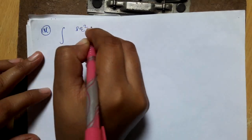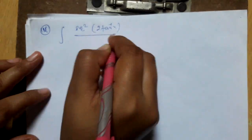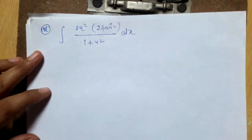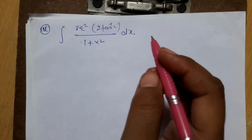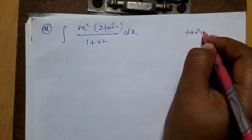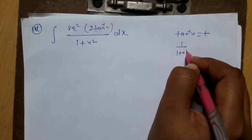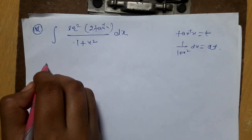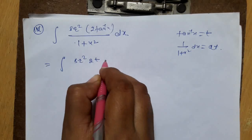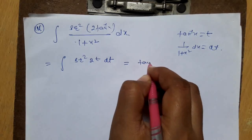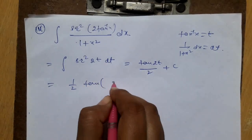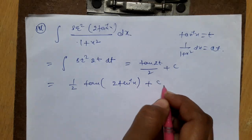Part 4: integration of sec²(2tan⁻¹x) / (1 + x²) dx. Put tan⁻¹x = t, so 1/(1 + x²) dx = dt. The integral becomes ∫sec²(2t) dt = tan(2t)/2 + c. The answer is (1/2) tan(2 tan⁻¹x) + c.